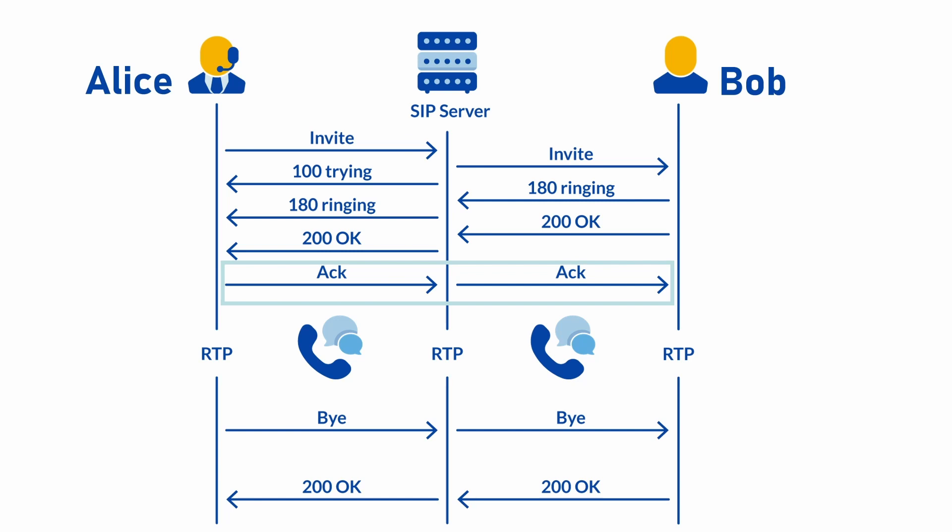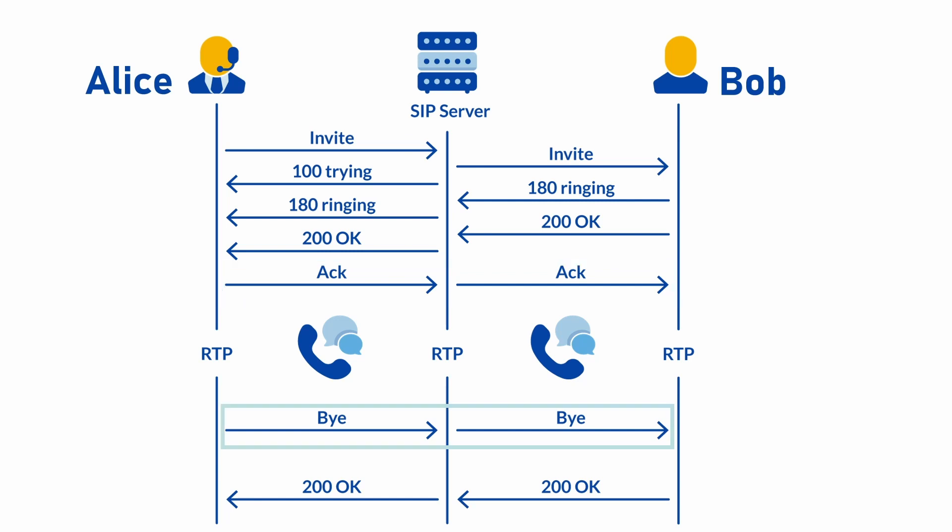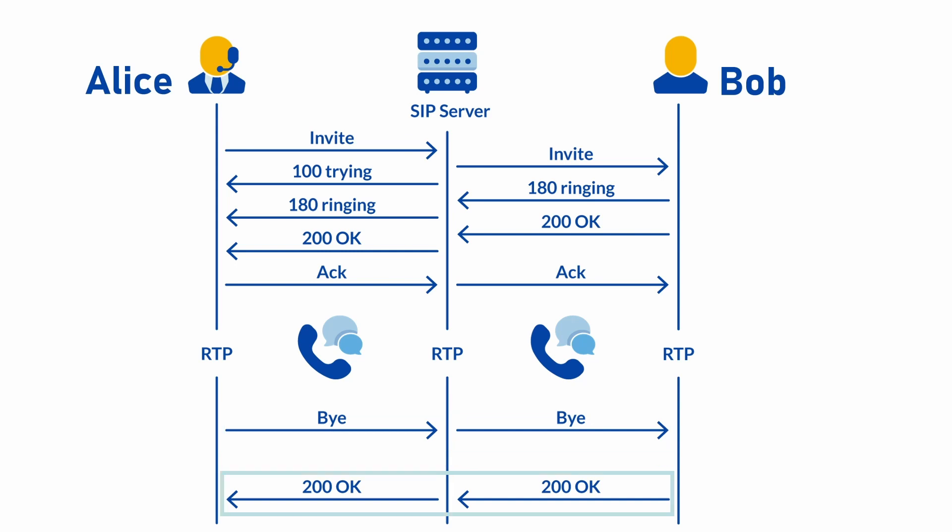The call has been established and both parties start sending their RTP streams. When one of the users hangs up, their telephone sends the BYE request to the other party and the other party responds with 200 OK. Both parties stop sending RTP data and the call is over. The completed call from the first INVITE to the last 200 OK is known as a dialogue.